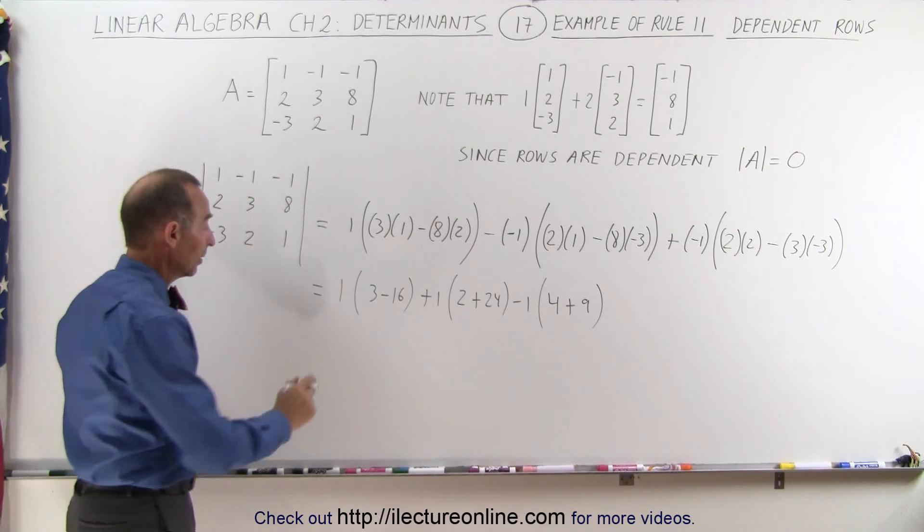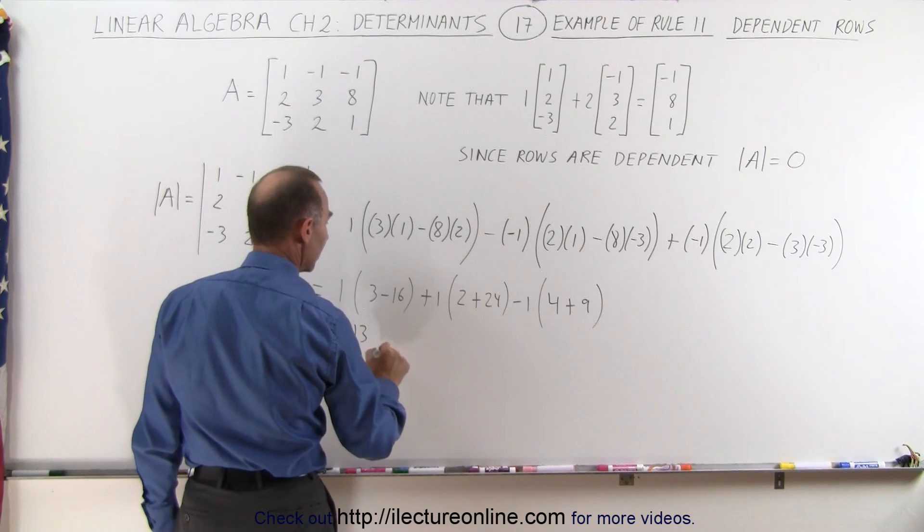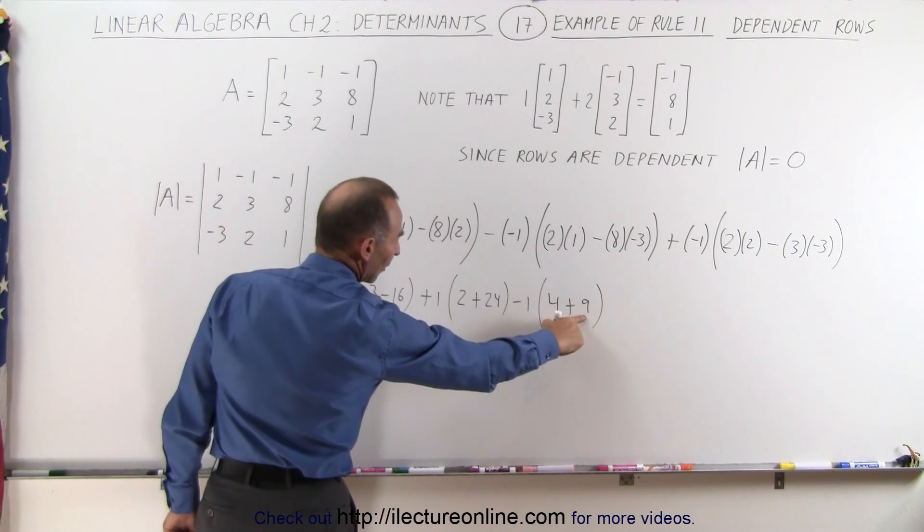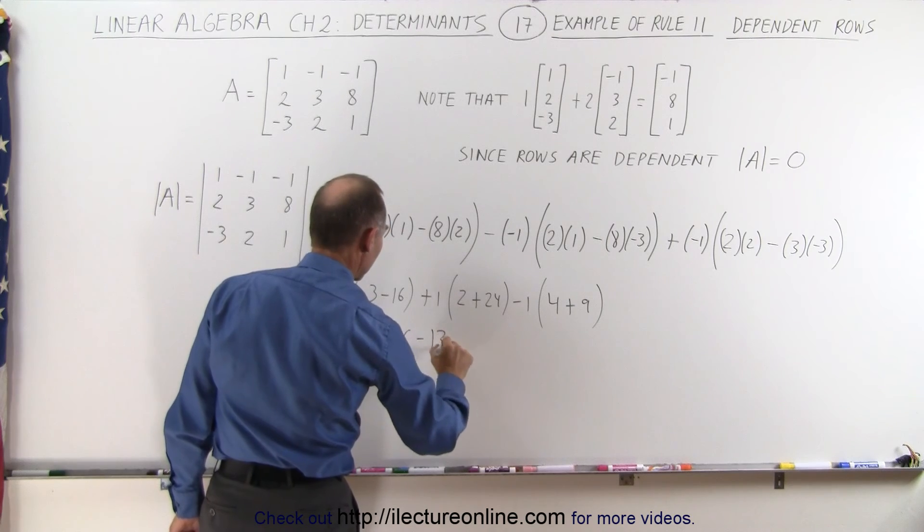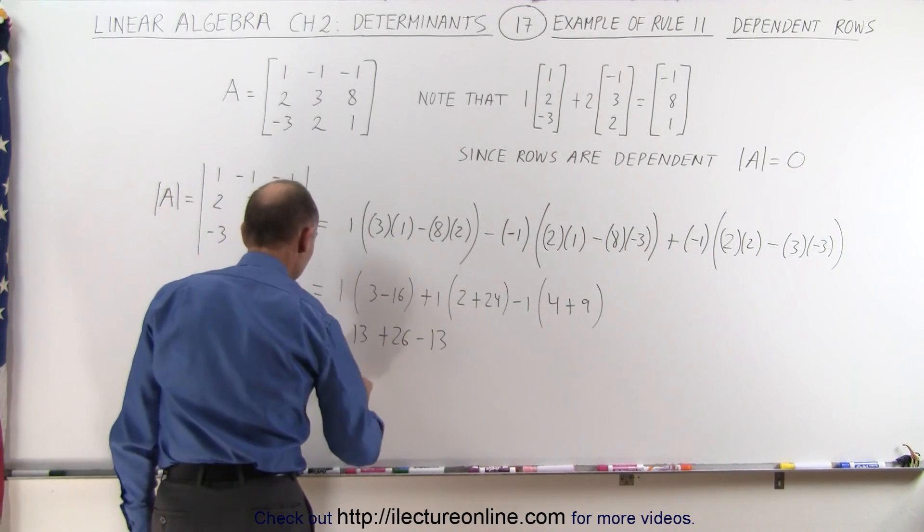Simplifying this a little bit more, we get 3 minus 16 times 1 is minus 13, this is plus 26, and here again that's 13 minus 1 is minus 13, and it becomes very quickly apparent that indeed that equals 0.